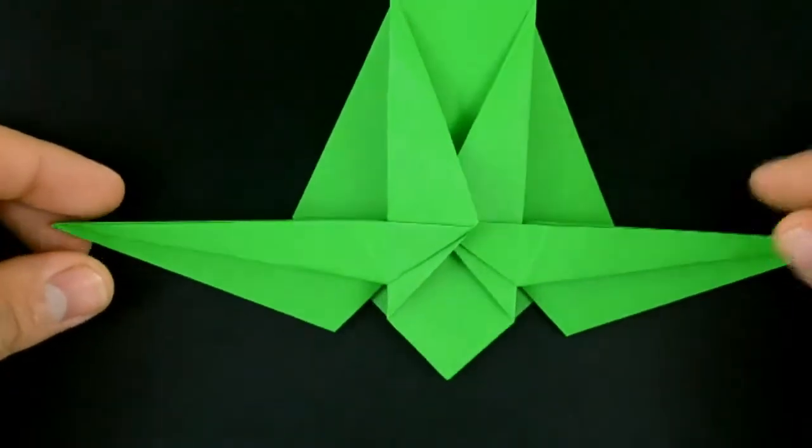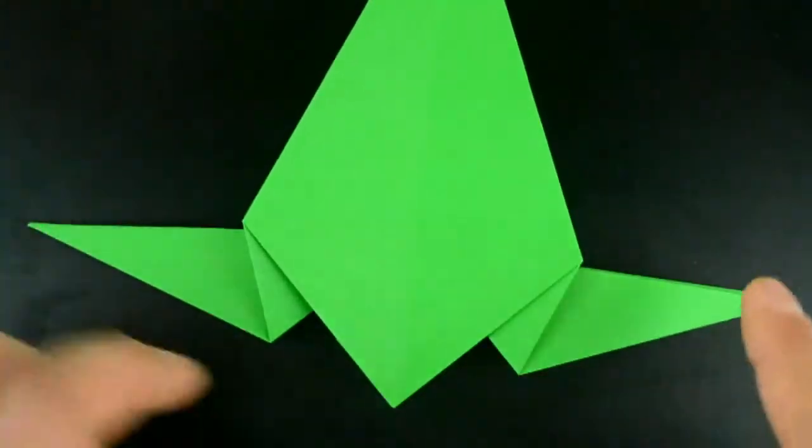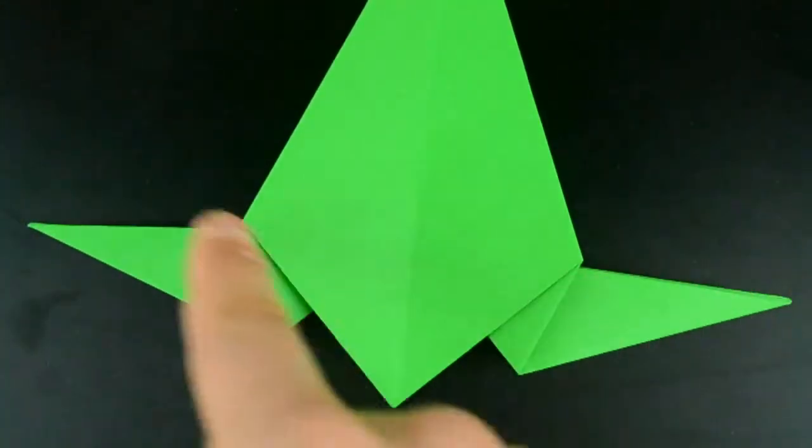Now we need to repeat exactly the same from the other side. First both flaps, then the corners.